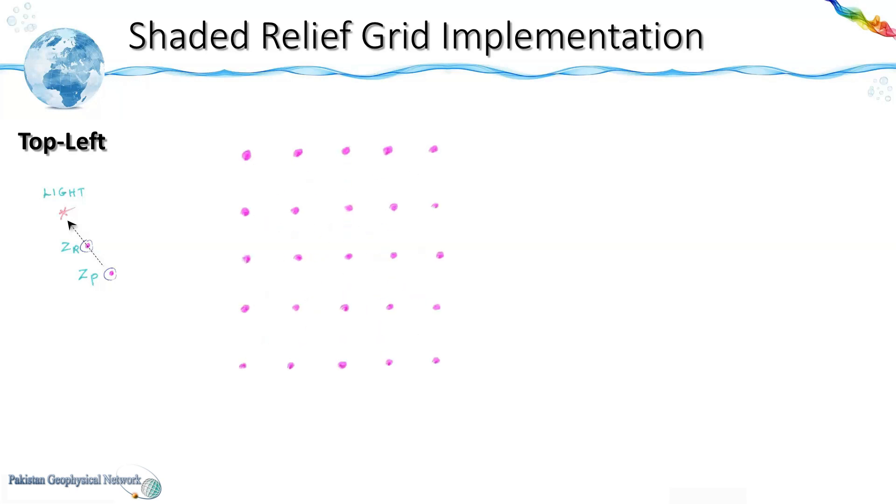We now consider a grid of 5 into 5 nodes where the columns are represented by i ranging from 1 to m and rows by j ranging from 1 to n. Then this is the node 1,1 and this is the node m which in this case is node 5,5.